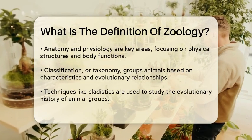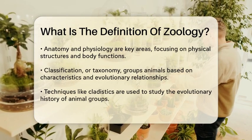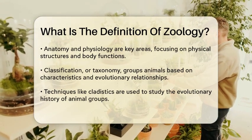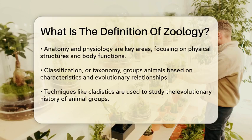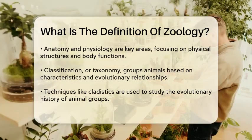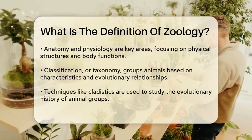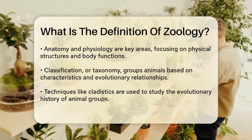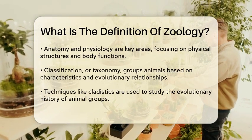Classification is another key aspect of zoology. This involves grouping animals based on their characteristics, differences, and relationships. This field is known as taxonomy, and it helps us understand how different species are connected and how they evolved over time. For instance, zoologists use techniques like cladistics to study the evolutionary history of different animal groups.